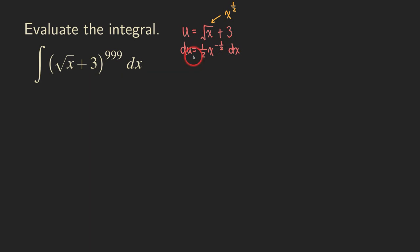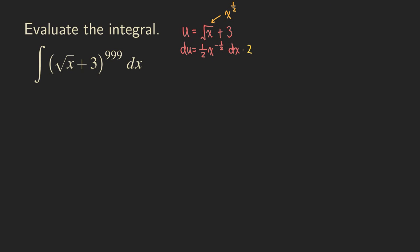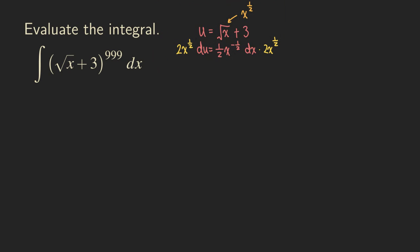We can solve for dx by moving everything to the other side of the equation. We multiply both sides by the reciprocal — multiply by 2 to cancel the one-half, and then multiply by x to the one-half to cancel the x to the negative one-half. So we get 2x to the one-half times du equals dx.